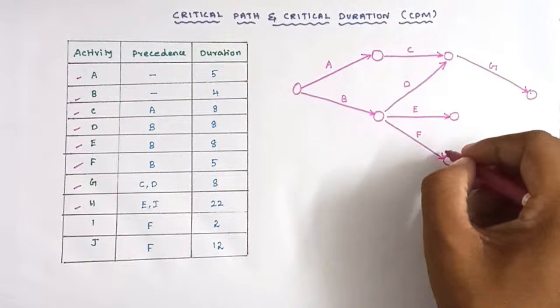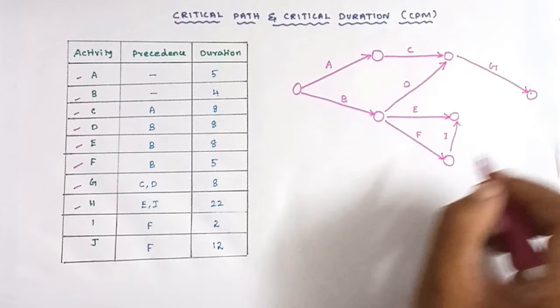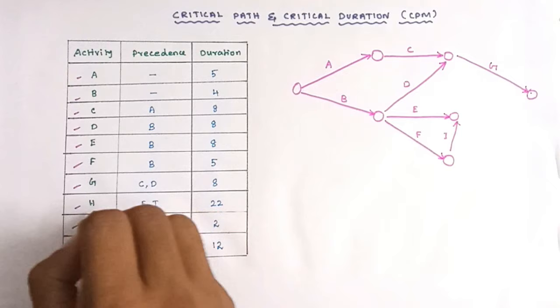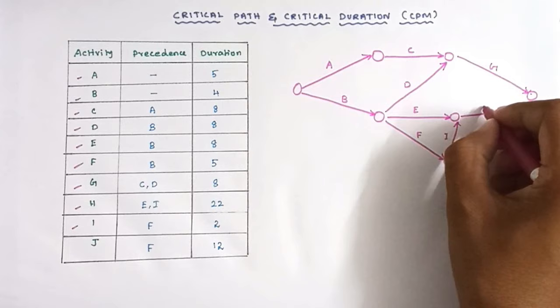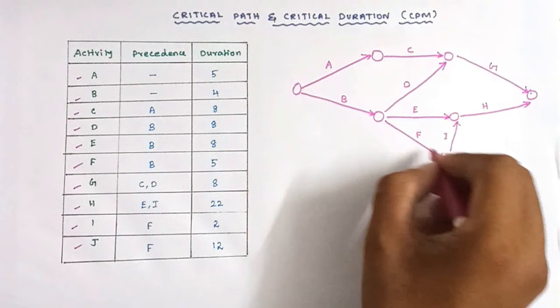Since E and I are the precedent activities of H, we can draw H here. For H activity, E and I is the precedent relationship, so we draw H. Then for J activity, the precedent is only F, so we can draw J here.